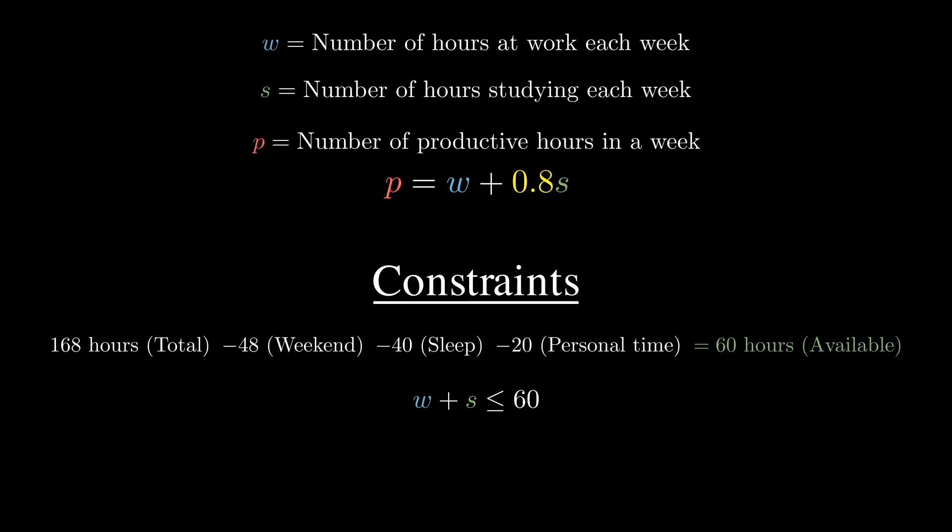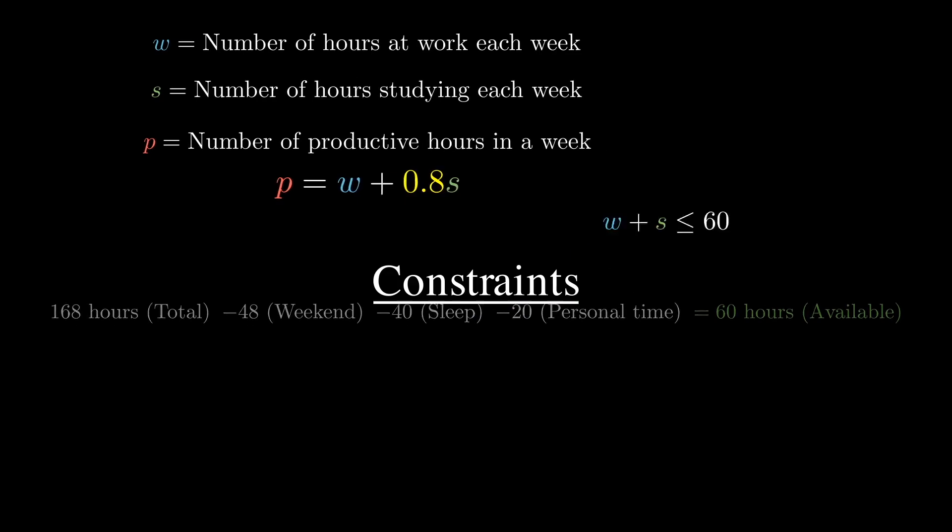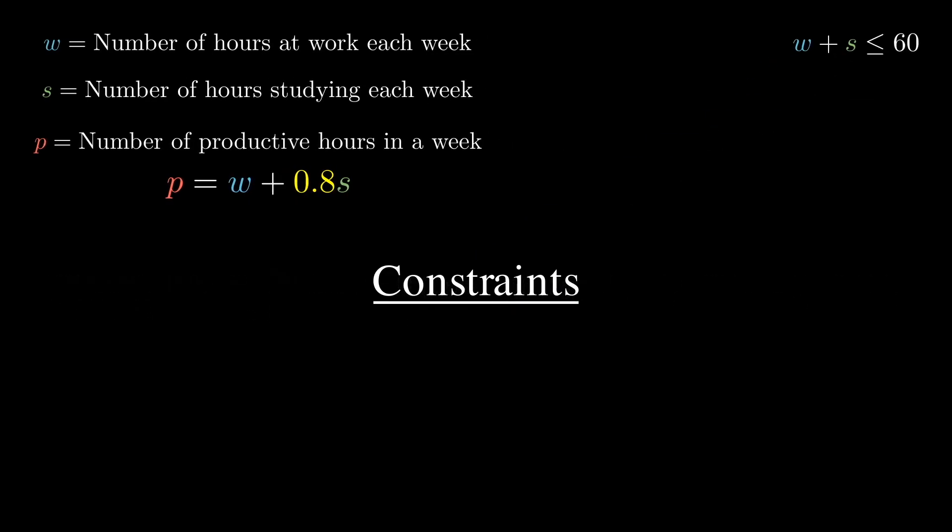In our made-up example, we'll also assume that your job is very flexible. Essentially, that you can pick your own working hours, subject to you at least working 10 hours a week. It's reasonable that your employer might not keep you on the payroll if you don't want to work at least 10 hours a week. Also, we're saying you can't work more than 40 hours a week. This is due to overtime restrictions. In other words, our constraint inequality is that w has to be greater than or equal to 10, less than or equal to 40.